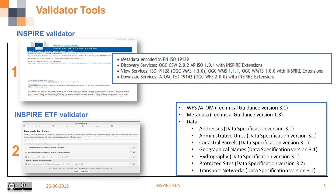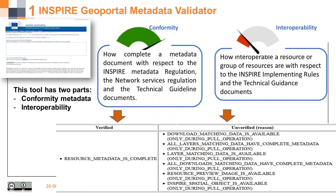There are now two validator tools for INSPIRE in Spain. The first, the INSPIRE GeoPortal metadata validator, validates metadata, discovery, and view and download services. The second is the INSPIRE ETF validator which tests additional issues. The first tool tests both conformity metadata — how complete a metadata document is with respect to INSPIRE metadata rules — and interoperability conformity — how compliant a resource is with INSPIRE implementation rules and technical guidelines. A conformity error counts as one error, but failing interoperability results in six errors.